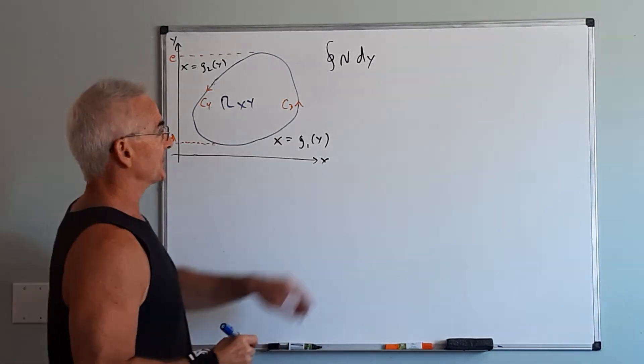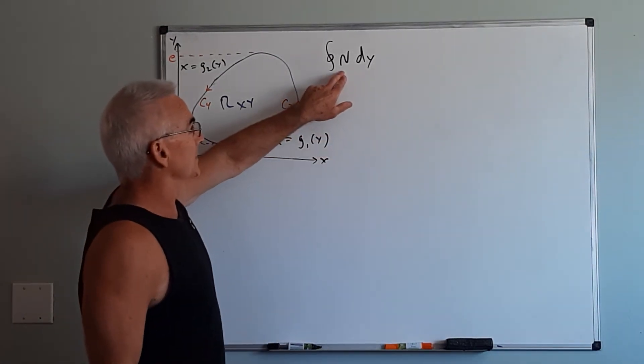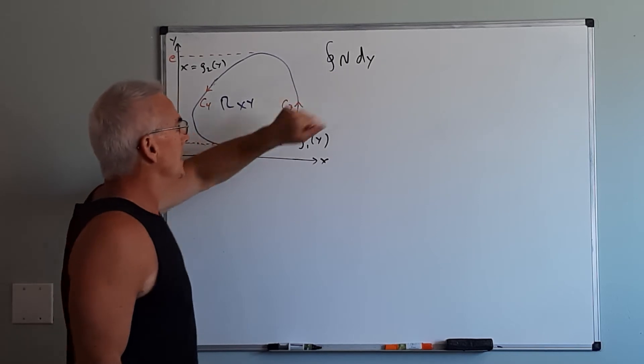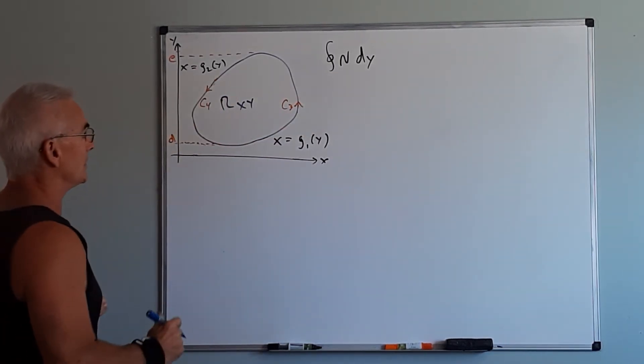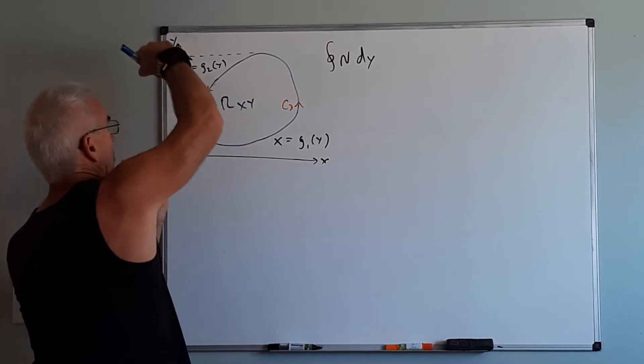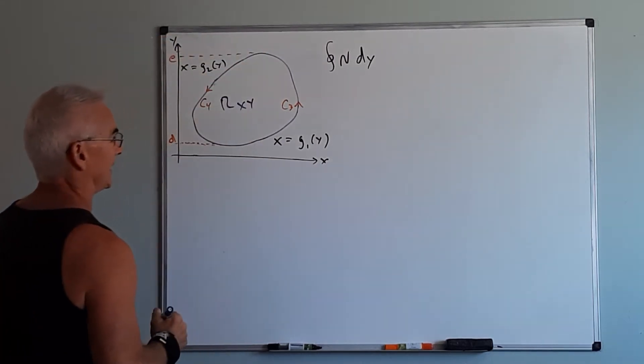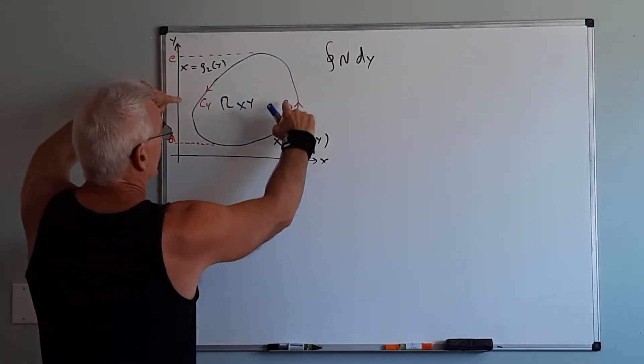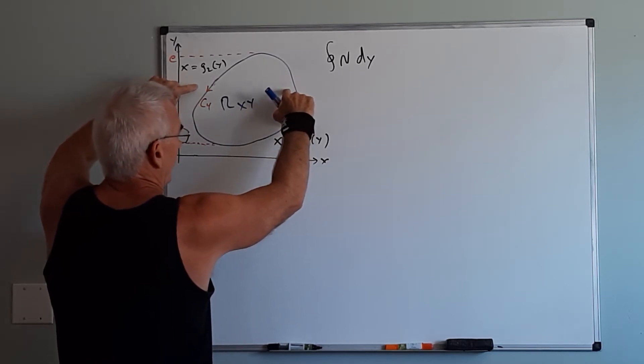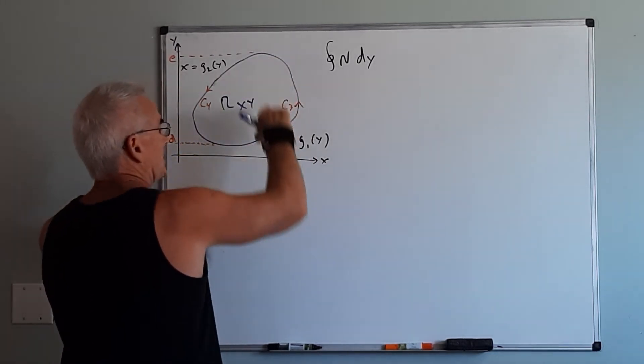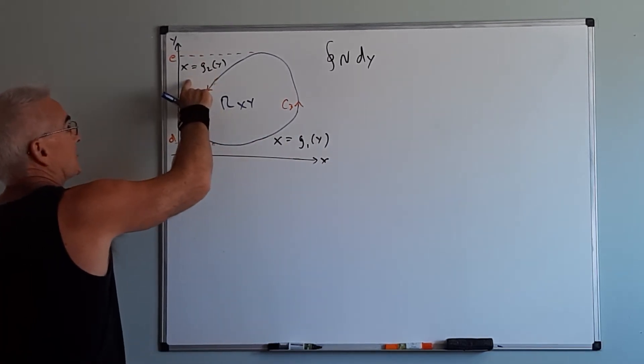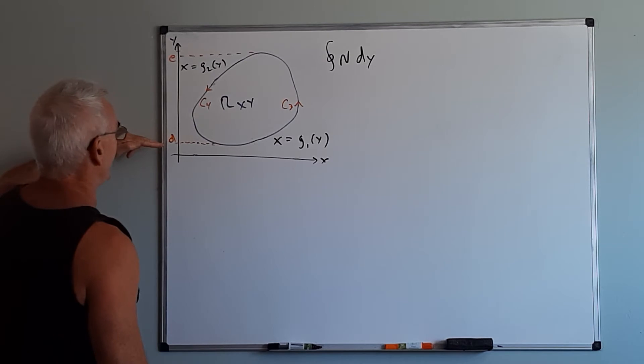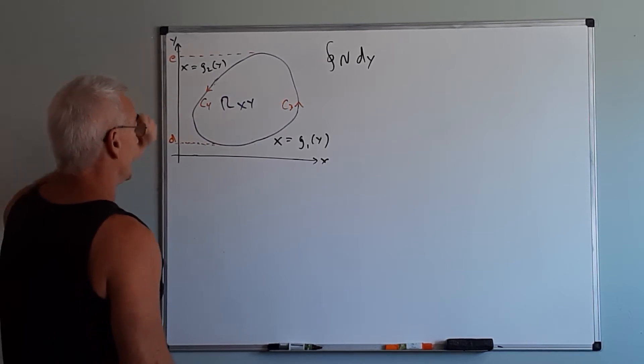Now we want to look at the second half. We now want to evaluate the loop n dy. So we're going to change our orientation. It's exactly the same region but this time we're going to go from horizontal tangent to horizontal tangent and define our two curves as c3 and c4 where c3 is defined by x equals g1 of y and c4 is defined by x equals g2 of y, and then the y values going from d to e.